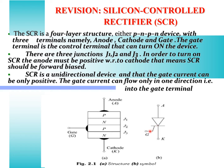SCR has four layers: A (anode), P, N, P, and N. These four layers form three junctions — J1, J2, and J3 — visible as the boundaries between the P and N regions.